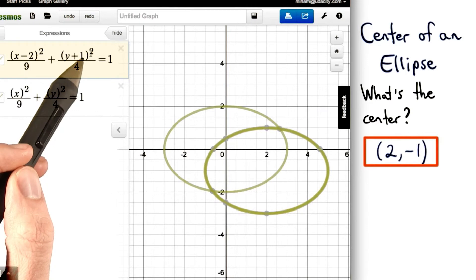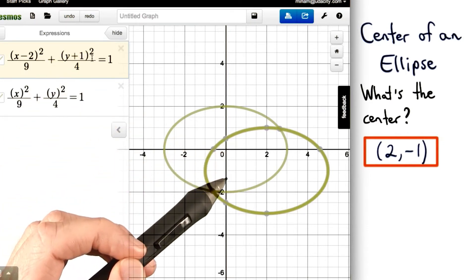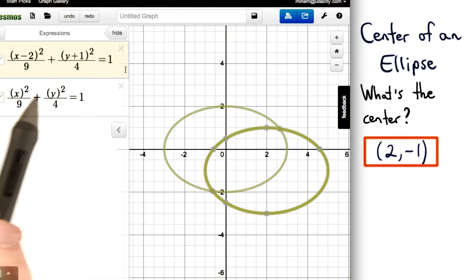Likewise with y, we might think our ellipse would move up 1 unit. But it turns out our ellipse moves down 1 unit. This is the same idea that we saw for circles, and it goes against our intuition. We want to be careful about it.